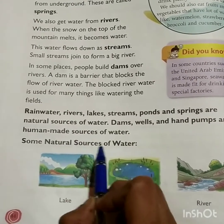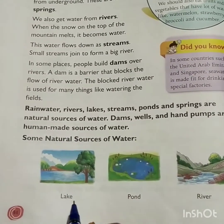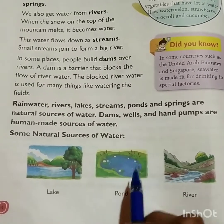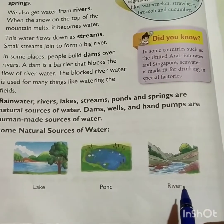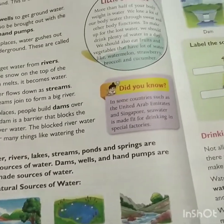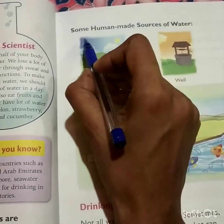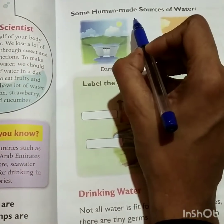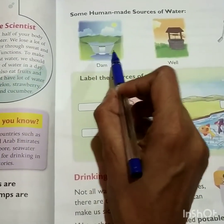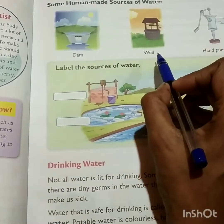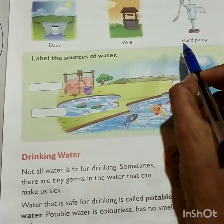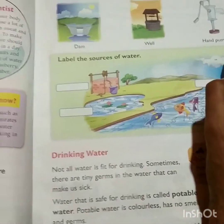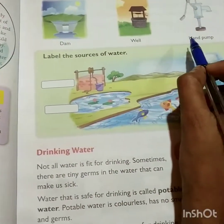Here are some natural sources of water: lake, L-A-K-E; pond, P-O-N-D; river, R-I-V-E-R. Some human-made sources of water: dam, D-A-M; well, W-E-L-L; hand pump, H-A-N-D P-U-M-P.